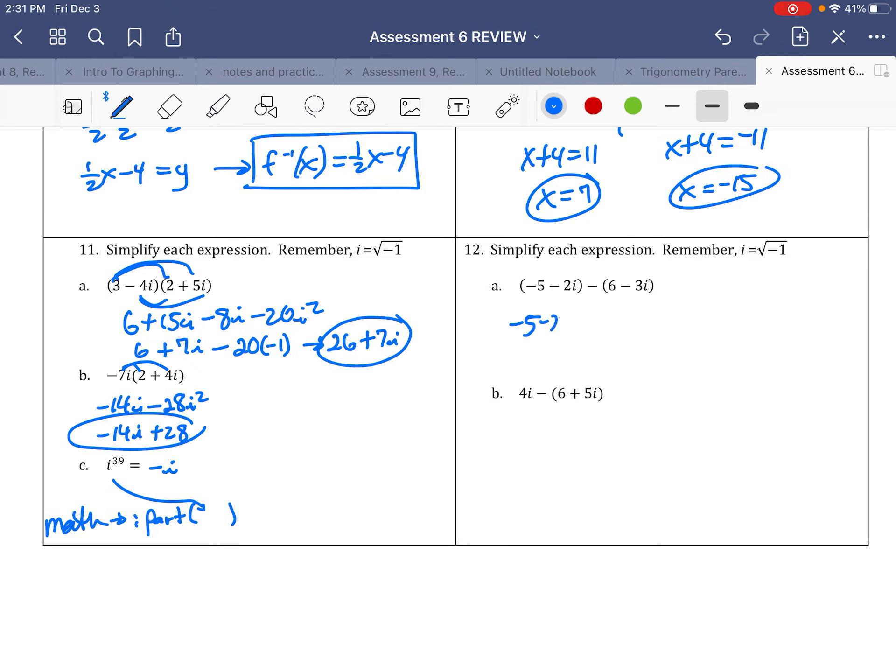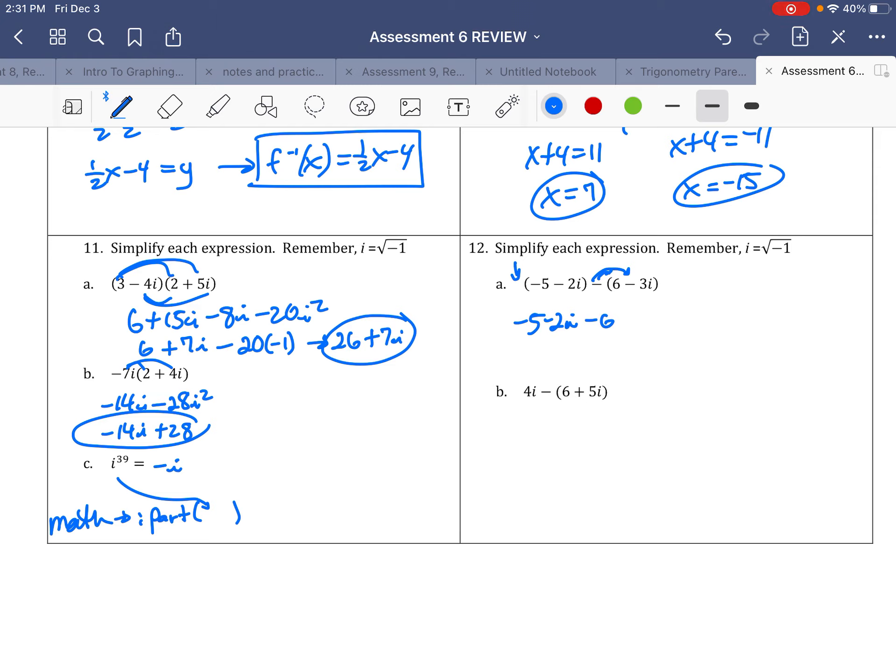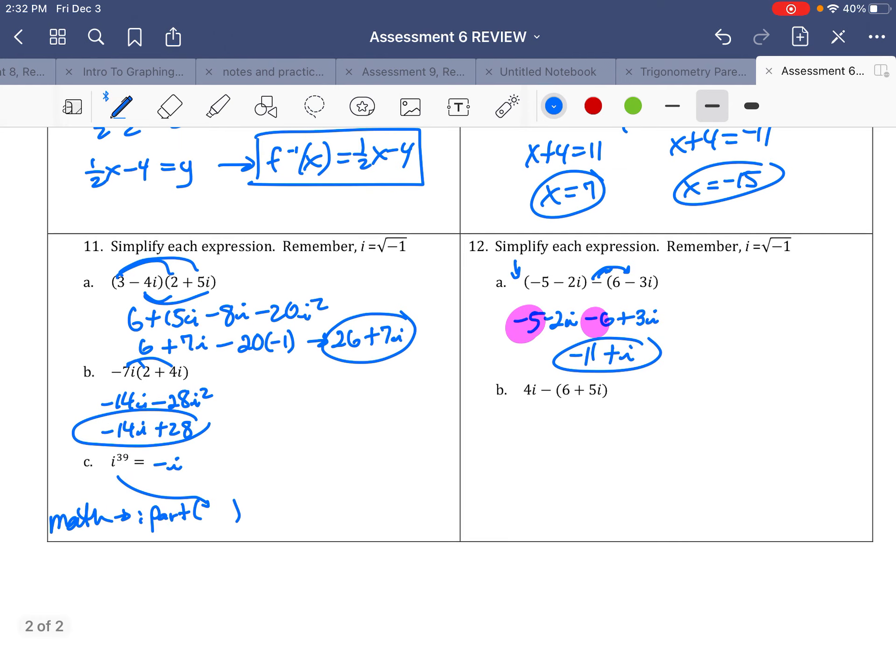Addition and subtraction over here. So I get negative 5 minus 2i, just coming out of the parentheses. There's nothing in front of the parentheses, so nothing changes. But this negative here, it applies to both of these parts right here. So it turns to negative 6, and minus and minus 3i is plus 3i. And it's combined like terms. Negative 5 goes with negative 6. That makes negative 11. And then negative 2i plus 3i is positive 1i. Down here I get 4i minus 6, and then minus a plus, so that's minus 5i. So I have negative 6, and then 4i minus 5i is negative i.